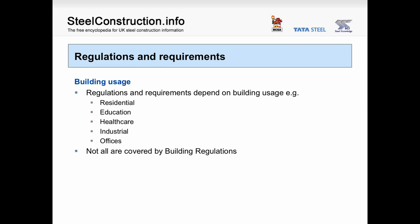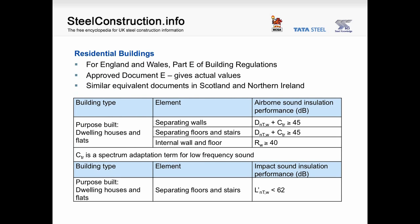Having looked at some principles of sound insulation and detailing, we will now look at the regulations and requirements that need to be satisfied in common building types. In residential buildings, the requirements are generally given in building regulations. In many other types of buildings, the building regulations do not cover specific requirements, and therefore it will be mainly down to client specifications.